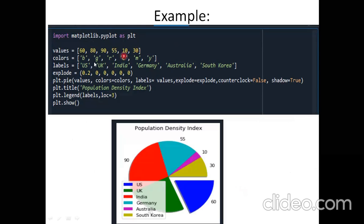In the example, values are given with labels — US is 60, UK is 80, India is 90, and so on. Colors array is also provided. explode is set as 0.2 for the first element and 0 for the others — so the first slice (US at 60) is popped out by 0.2. The others remain intact. This is how explode works.